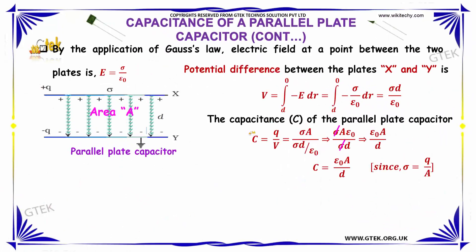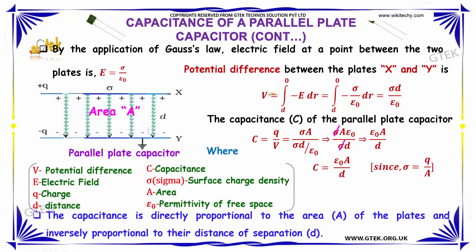By application of Gauss's law, the electric field at a point between the two plates is E = σ/ε₀, where σ is the surface charge density and ε₀ is the permittivity of free space.